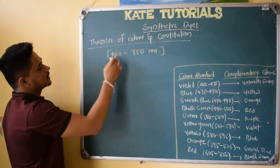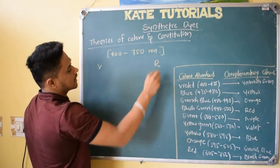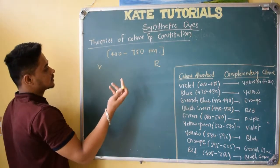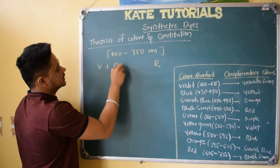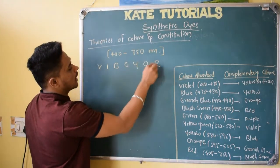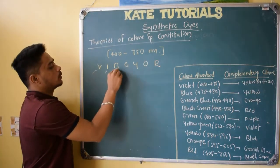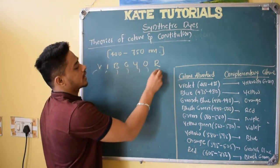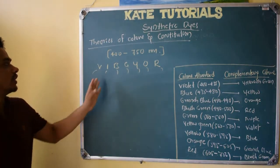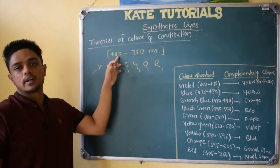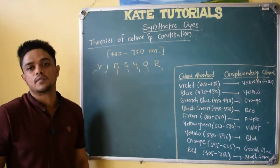400 nanometer starts with violet and ends with red. How to remember? VIBGYOR — violet, indigo, blue, green, yellow, orange, and red. These are the colors we have studied. Violet starts from 400 nanometer and ends with red. Red will be 750 nanometer.